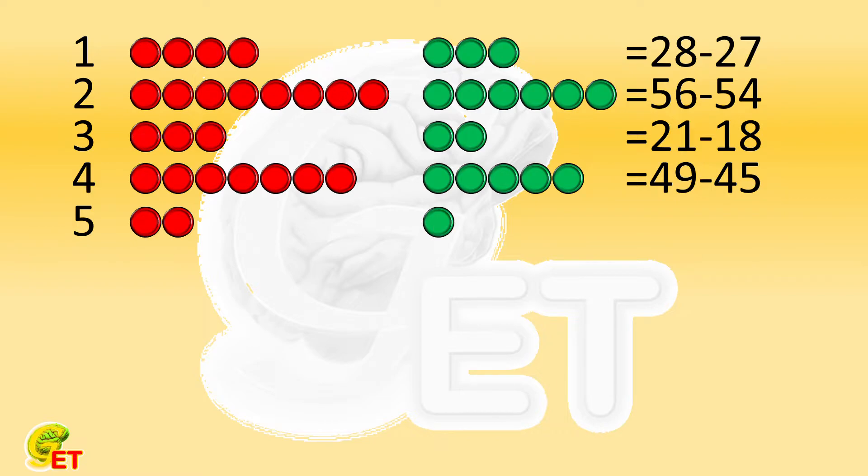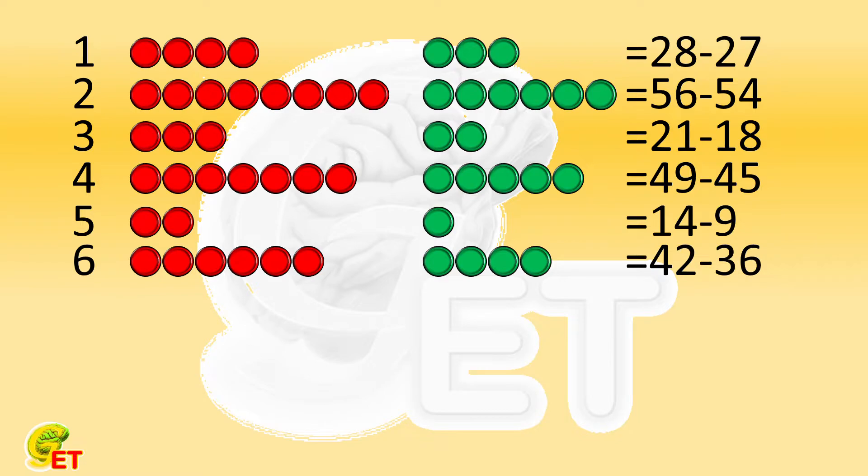The fifth, red for twice, green for once. 14 minus 9. The sixth, red for 6 times and green for 4 times. 42 minus 36. The seventh, the most direct. Red. Done.